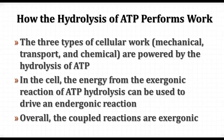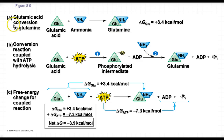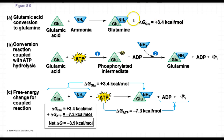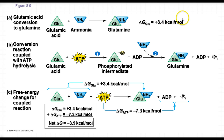We're going to look at some examples of coupled reactions where the hydrolysis of ATP drives endergonic reactions of making other molecules. Here we have the conversion of glutamic acid to glutamine — both are amino acids. In order to make glutamine from glutamic acid, you have to add ammonia. This is an anabolic process, and it's going to take a positive input of 3.4 kilocalories per mole of energy to make this happen.